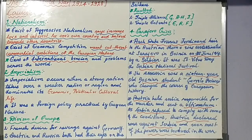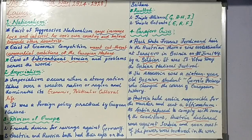When we talk about Contemporary World, we will come across three major topics: the First World War and Second World War, Fascism, Nazism, and UNO and its agencies. These are the concepts covered under Contemporary World.